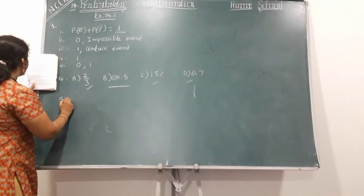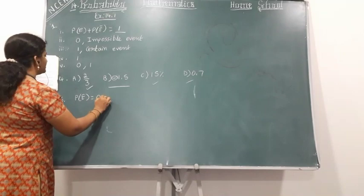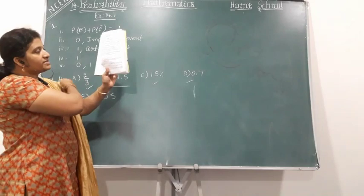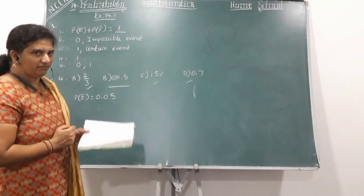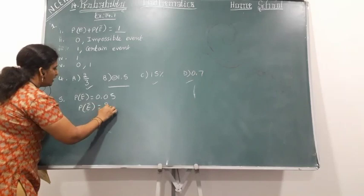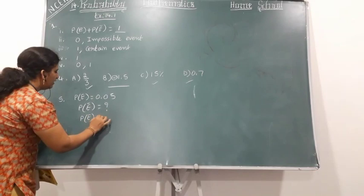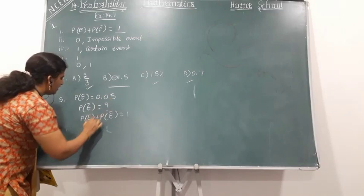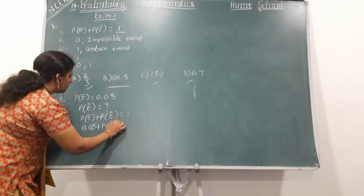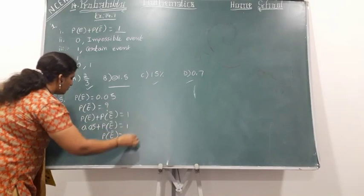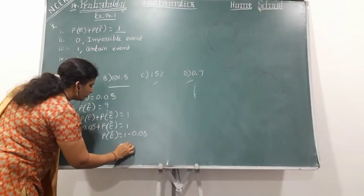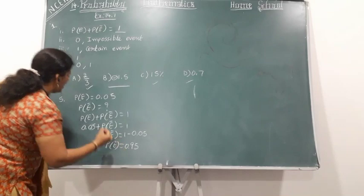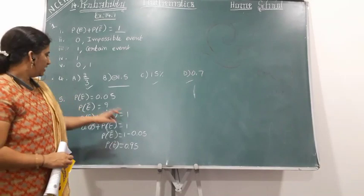If P(E) is equal to 0.05, what is the probability of not E? Not E is the complementary event. P(E bar) is equal to how much? We know the rule: P(E) plus P(E bar) is equal to 1. P(E) value is 0.05. So: 0.05 plus P(E bar) is equal to 1. Therefore P(E bar) is equal to 1 minus 0.05, which gives 0.95.